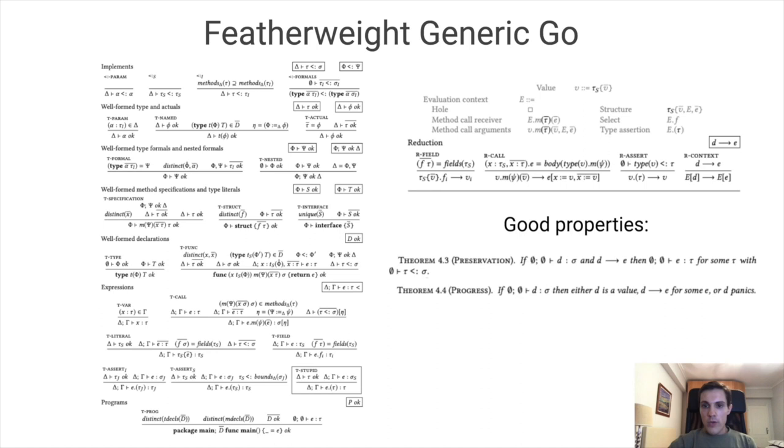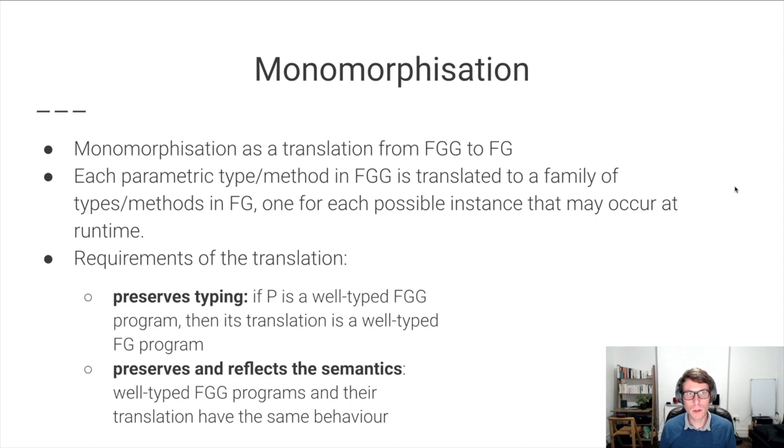I'm going to hand off the talk to Julian, who's going to tell you about how monomorphization of FGG programs works. We use monomorphization as a translation from FGG to FG. The idea is that each parametric type or method in FGG is translated to a family of types or methods in FG, but there is one for each possible instance that may occur at runtime.